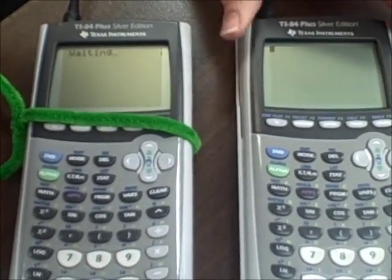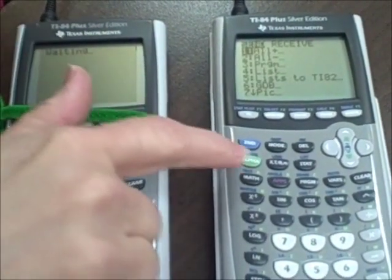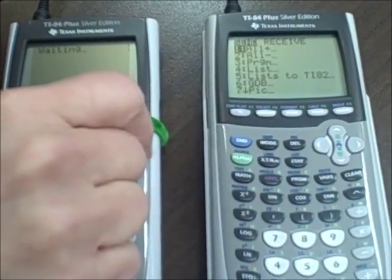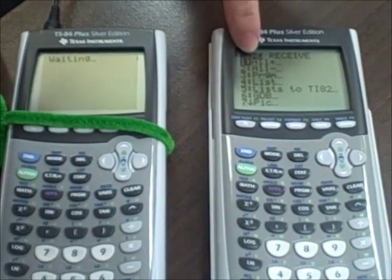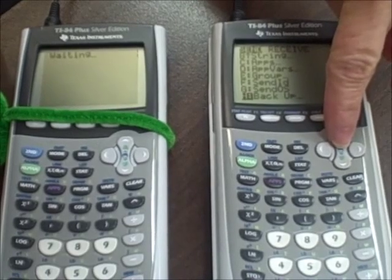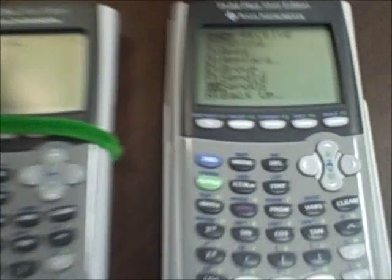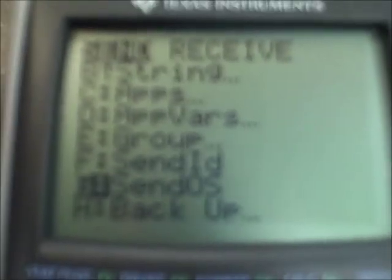So on the calculator that has the most up-to-date operating system, we press second link or second variable key. And I'm going to send, but I need to send the operating system. So I up arrow, for most of you guys, it will be up arrowed twice to the letter G, and it says send OS, which is send operating system.